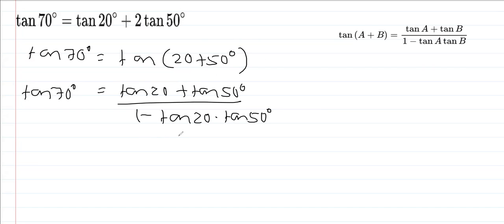Now I am doing cross multiplication. Using the distributive property, I can show you the working: tan 70° multiplied by (1 - tan 20° tan 50°), and on the other side we will have tan 20° plus tan 50°.